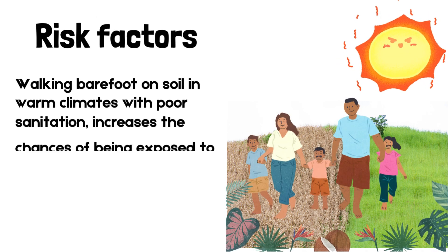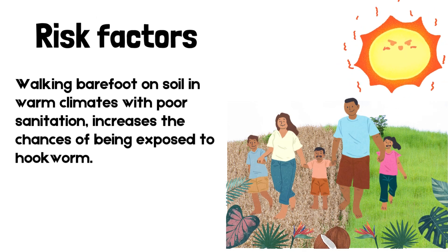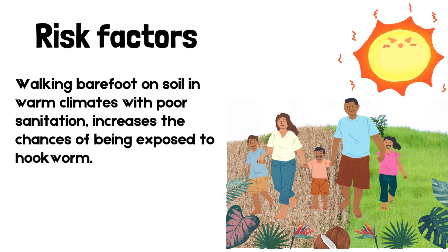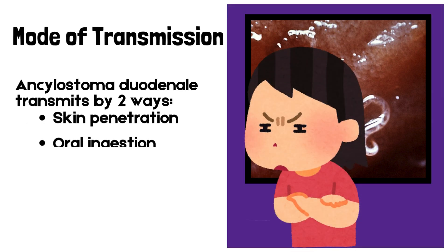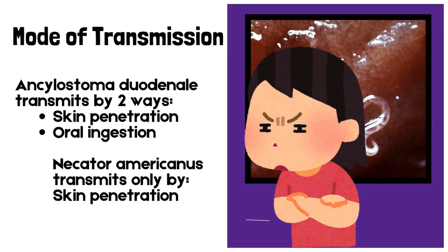Risk factors: Walking barefoot on soil in warm climates with poor sanitation increases the chances of being exposed to hookworm. Mode of transmission: Ancylostoma duodenale transmits by two ways — skin penetration and oral ingestion. Necator americanus transmits only by skin penetration.